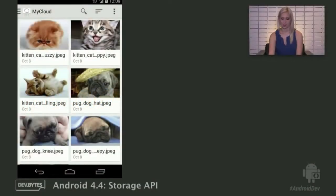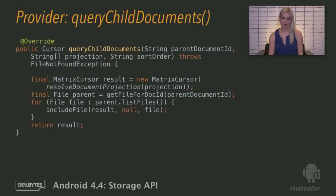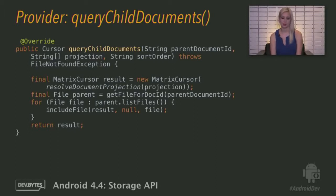Here's what shows up when you query children. This method gets called when you choose an application's root in the Picker UI. It gets the child documents of a directory and can be called at every level in the file hierarchy, not just the root. This sample implementation is very simple — it makes a new cursor with the requested columns and then adds information about every immediate child in the parent directory to the cursor. IncludeFile adds the file's display name, MIME type, size, and so forth. A child can be an image, another directory, or any type of file.